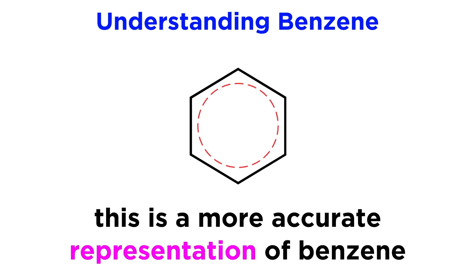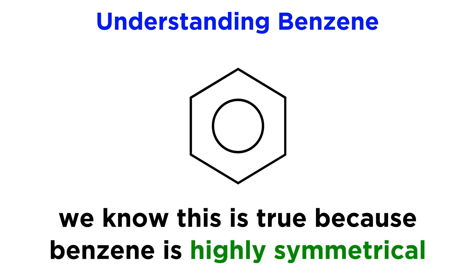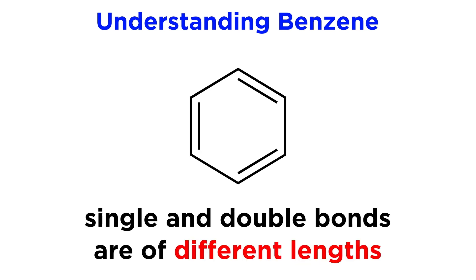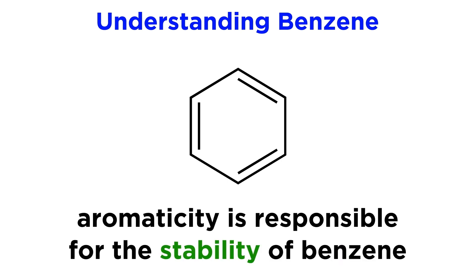So that's what benzene truly looks like, which is why we sometimes draw benzene with a circle instead of three pi bonds, because it is actually more accurate. We know this is the case because benzene is indeed highly symmetrical, rather than consisting of discrete single and double bonds of varying lengths. And aromaticity is a property that contributes to the high stability of benzene.